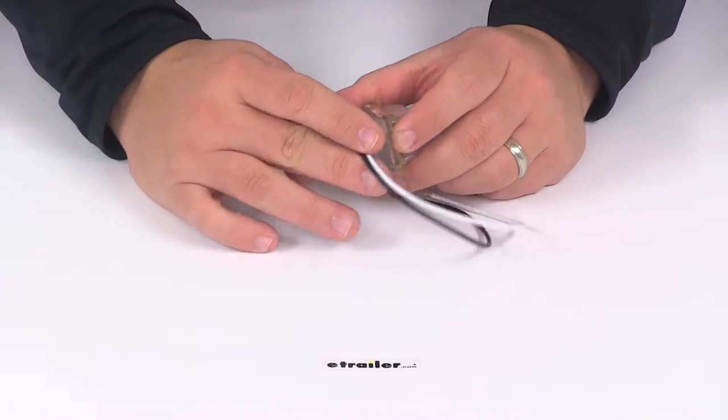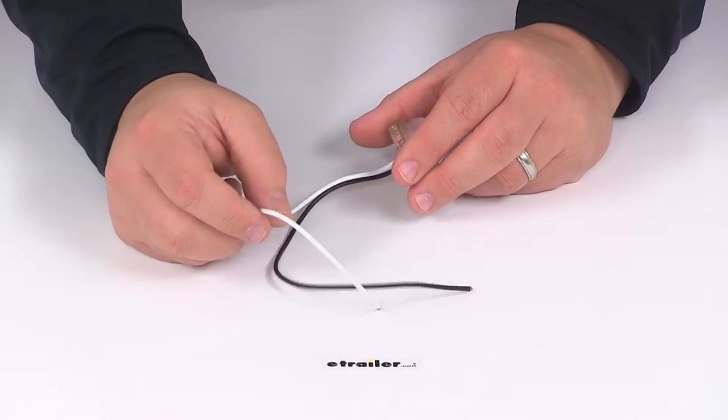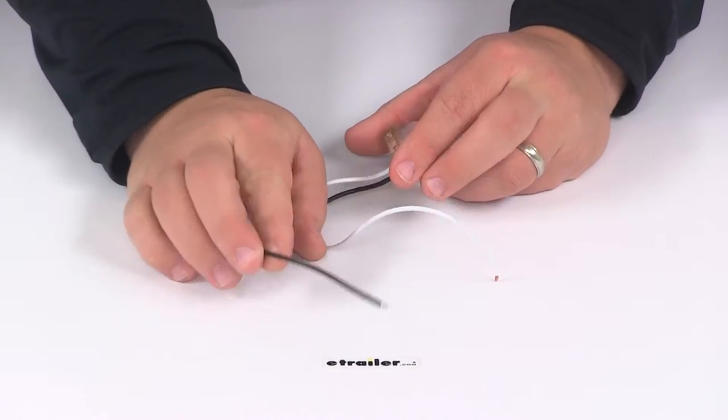On the back side we're going to have the lead and ground wires for mounting to all surfaces. White wire is your ground, black wire is your power wire.